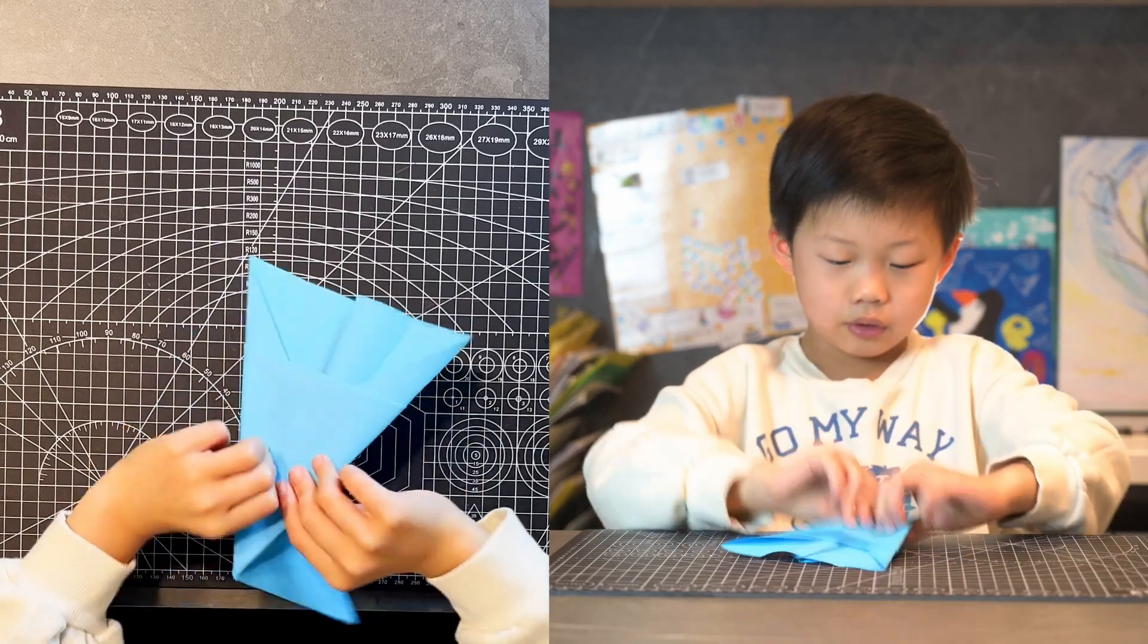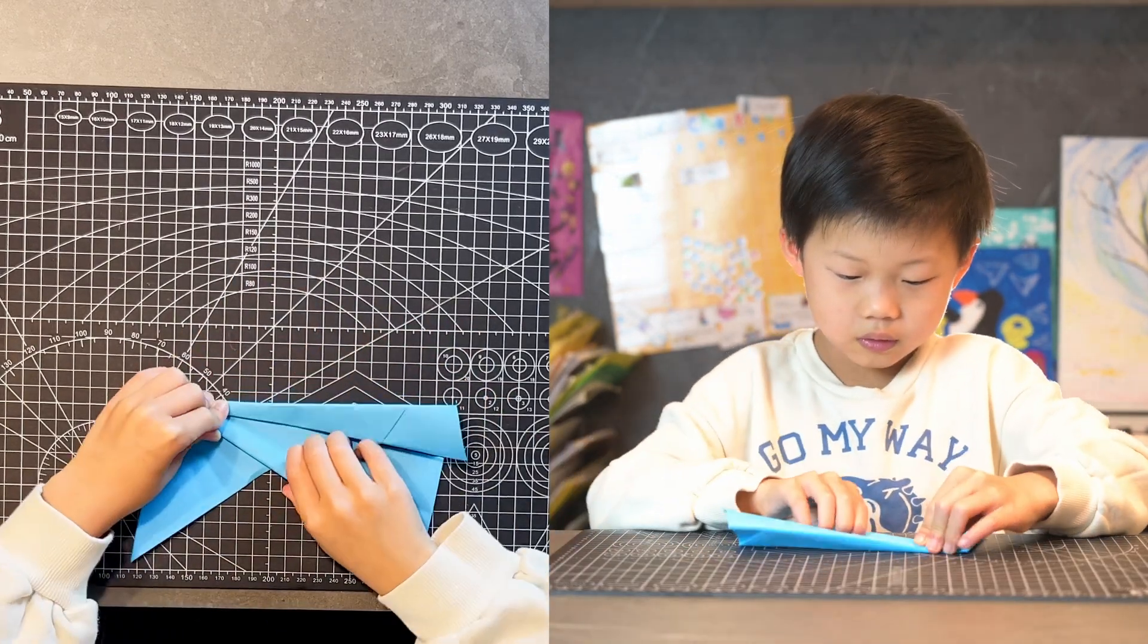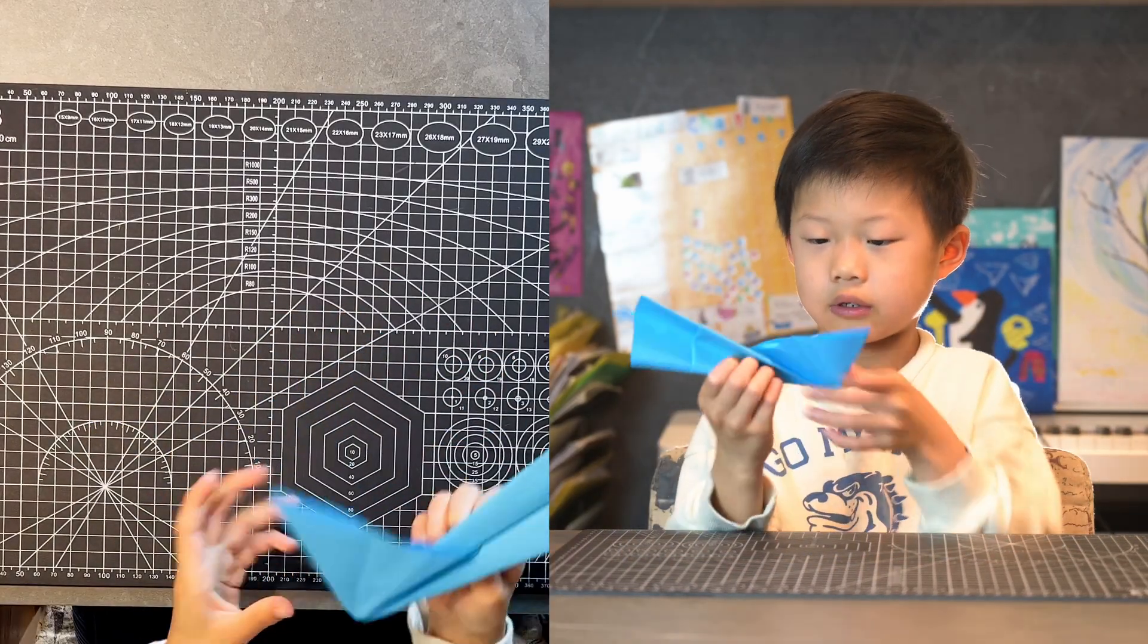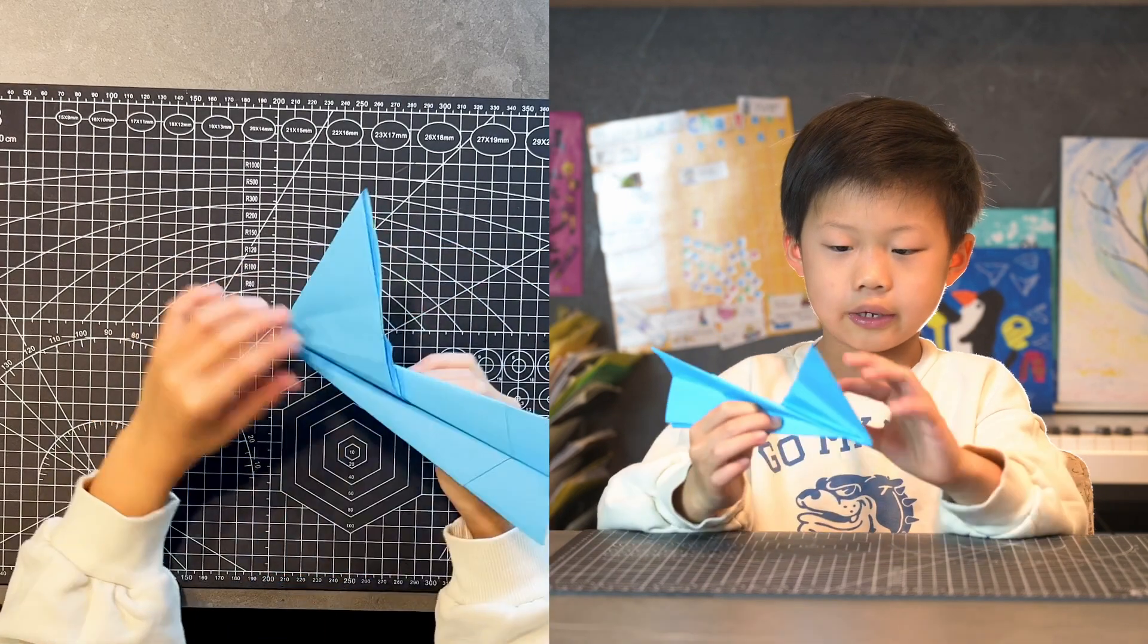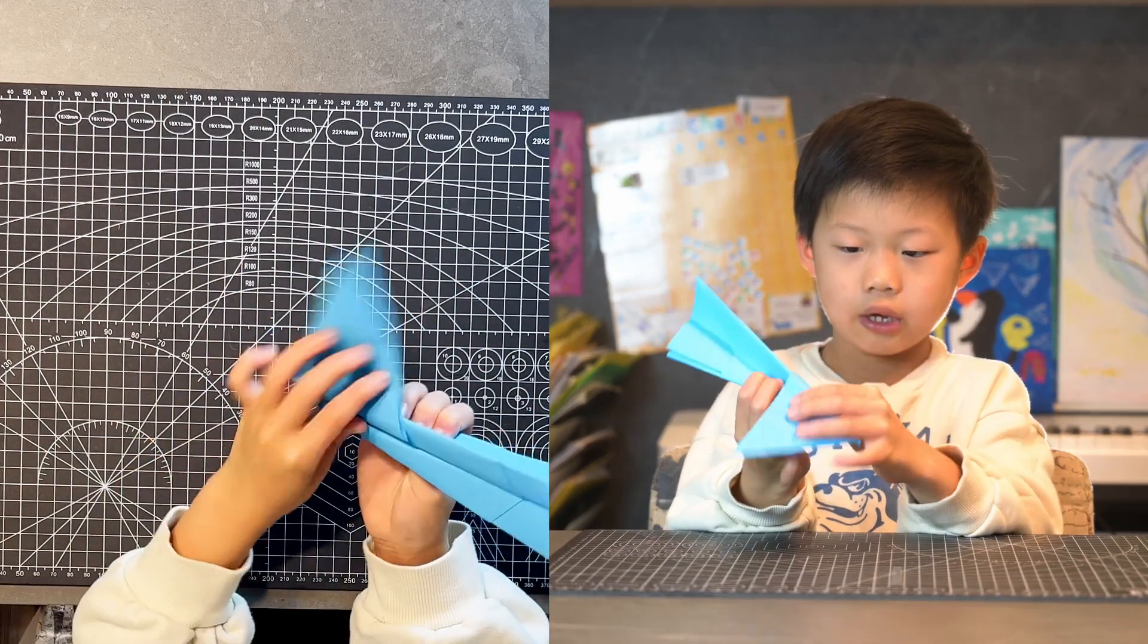And then flip it over, fold it like this. Top edge to center, top edge to center. Fold it in half and then fold it which way the flap is leading. Wrap it which way around.